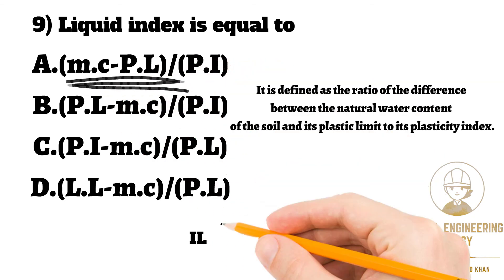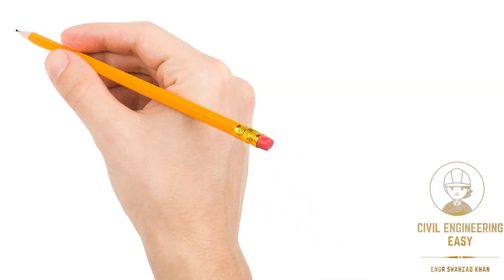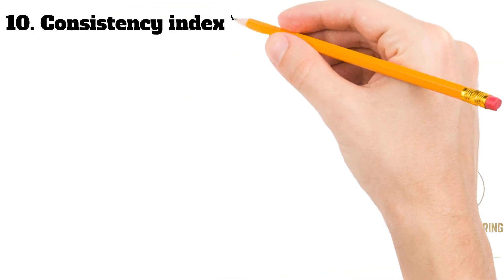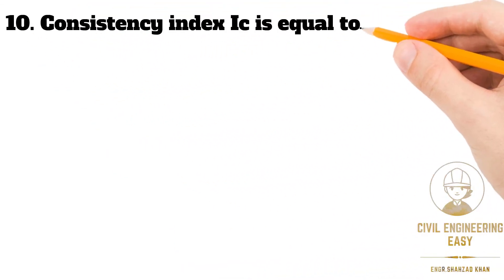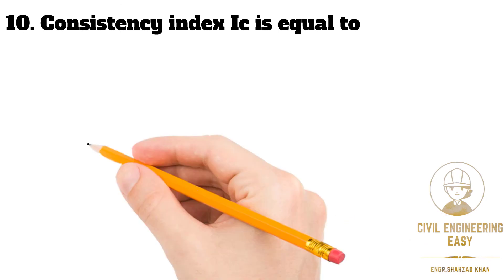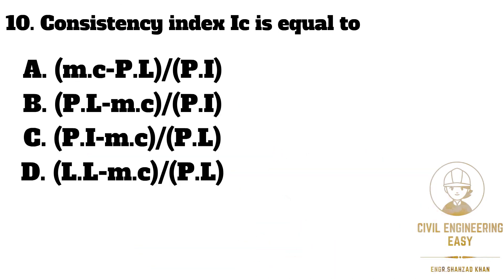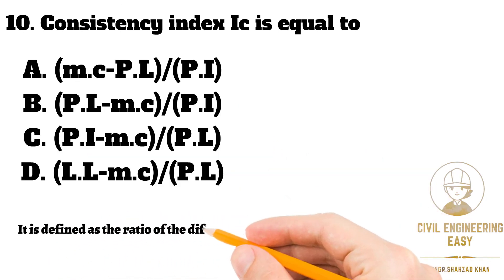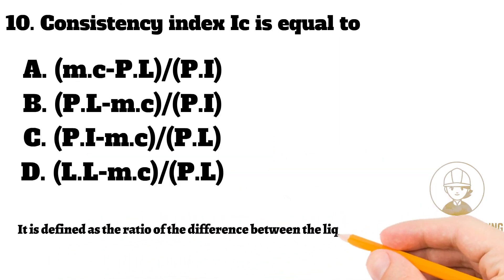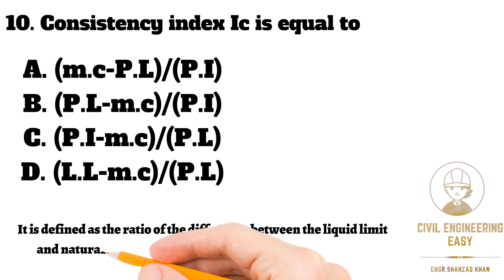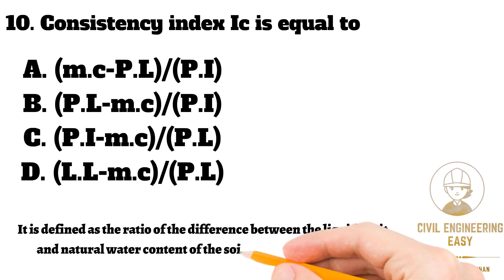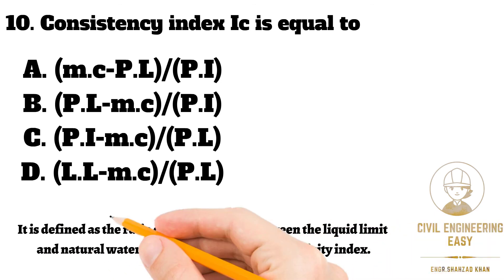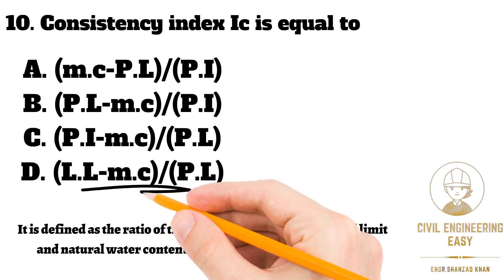We write liquid index mathematically as IL = (w - PL) / PI. In MCQ number 10, consistency index IC is defined as the ratio of the difference between the liquid limit and natural water content of the soil to its plasticity index. We write it mathematically as IC = (LL - w) / PI.